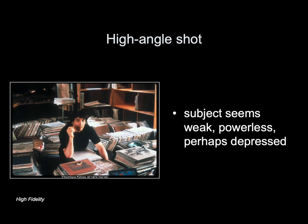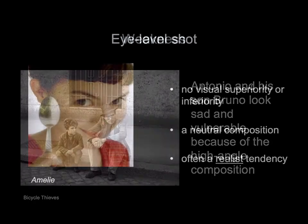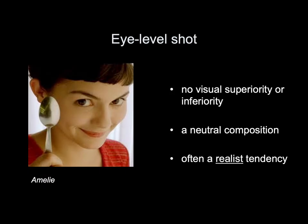High angle shot: the subject seems weak, powerless, perhaps depressed. For example, Antonio and his son Bruno look sad and vulnerable because of a high angle composition. Eye level shot: no visual superiority or inferiority — a neutral composition, often a realist tendency.